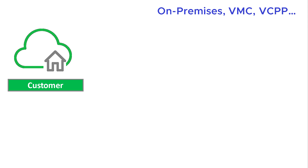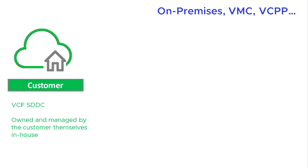The first deployment option, and the one most people are at today — since most people have been deploying virtual machines for the last 10 to 20 years on vSphere — is an on-premises VCF SDDC, or Software Defined Data Center. This is where the entire data center is owned and managed by the customer themselves. They provide all the equipment, software licenses, skills, and know-how. That's what people generally refer to as on-premises.